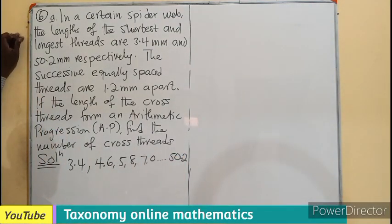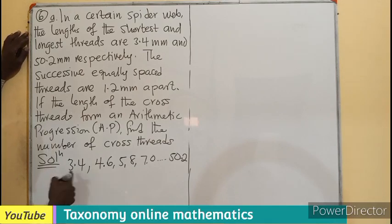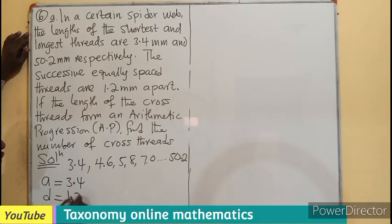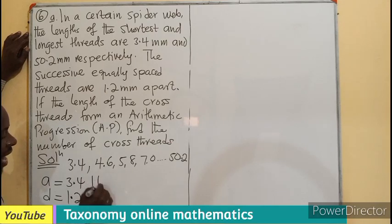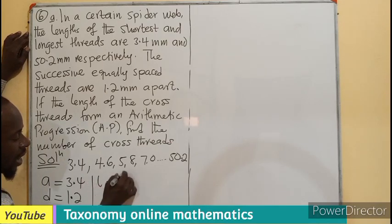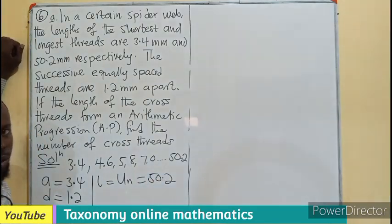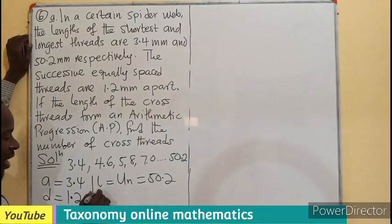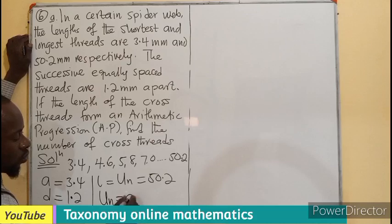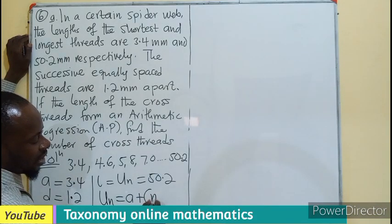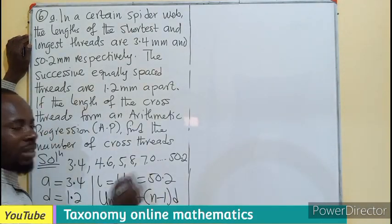From here, we can say that our first term will be 3.4, the common difference will be 1.2, and the last term will be 50.2. Remembering the formula, un equals a plus (n minus 1) times d.